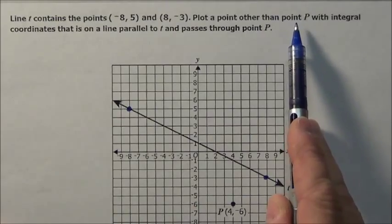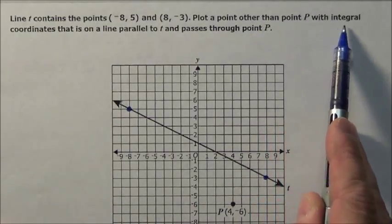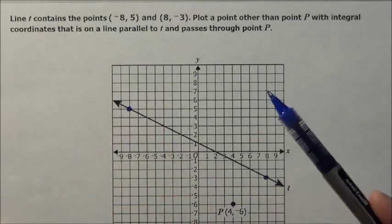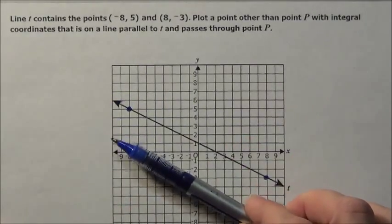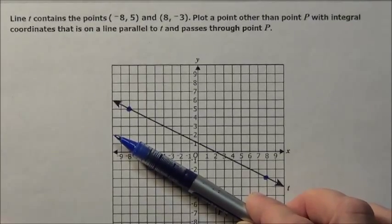So it wants to plot a point other than point P with integral coordinates that is on a line parallel to this line right here, and it goes through P, so we have to find some other point. That's what we're going to have to do.